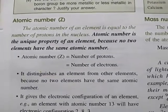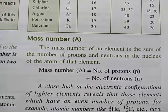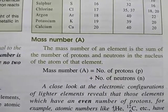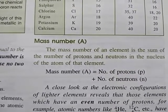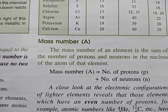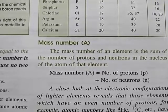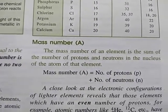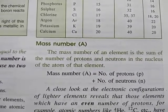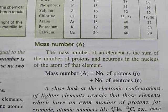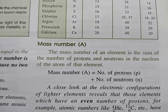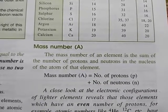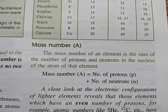The mass number of an element is the sum of the number of protons and neutrons in the nucleus. Mass number is essentially the atomic mass — the weight of an atom. An atom has electrons, protons, and neutrons, but since the mass of electrons is very negligible, we consider only the mass of protons and neutrons. Therefore, mass number equals number of protons plus number of neutrons.